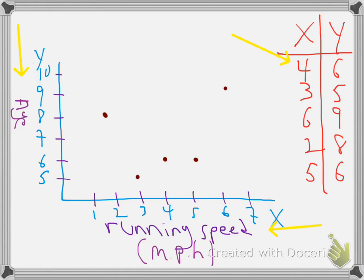And if you look on this graph, this first kid that runs four miles an hour and is six years old, he's plotted right there. And the second kid that runs three miles per hour and is five years old, that is her score right there.